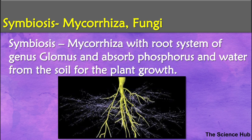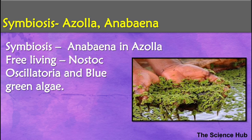Mycorrhiza also provides benefits like resistance to root-borne pathogens and tolerance to salinity and drought. Cyanobacteria such as Nostoc and Anabaena are autotrophic microbes found in aquatic and terrestrial environments that fix atmospheric nitrogen. In paddy fields, these act as important bio-fertilizers. Blue-green algae also add organic matter to the soil and increase its fertility.